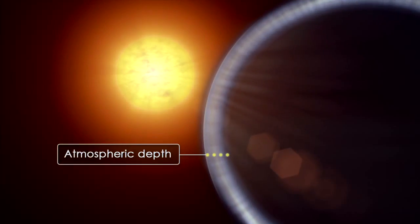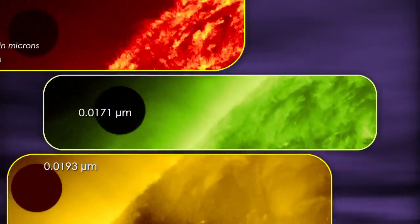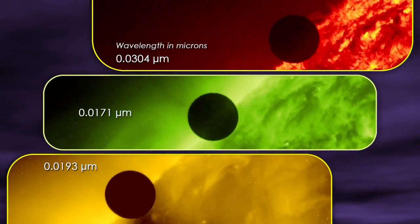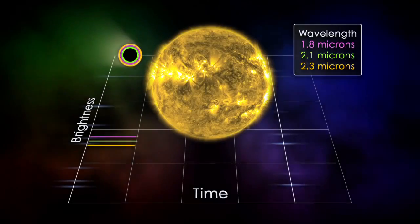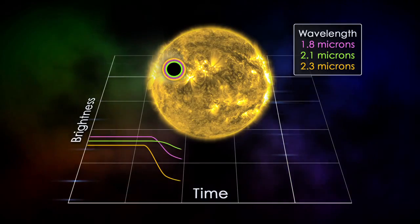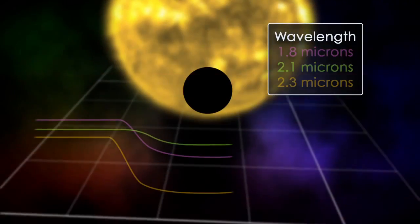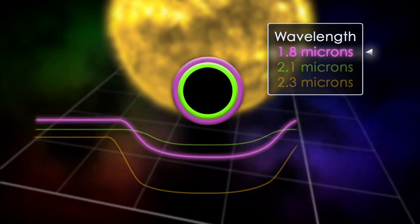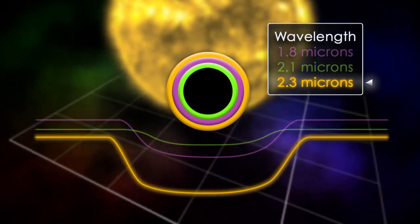Knowing the depth and density of the atmosphere is also important. To figure this out, astronomers observe the transit at many different wavelengths. At wavelengths where more absorption occurs, the planet will appear larger, with the change in size indicating how deeply the atmosphere extends and its density at different altitudes.